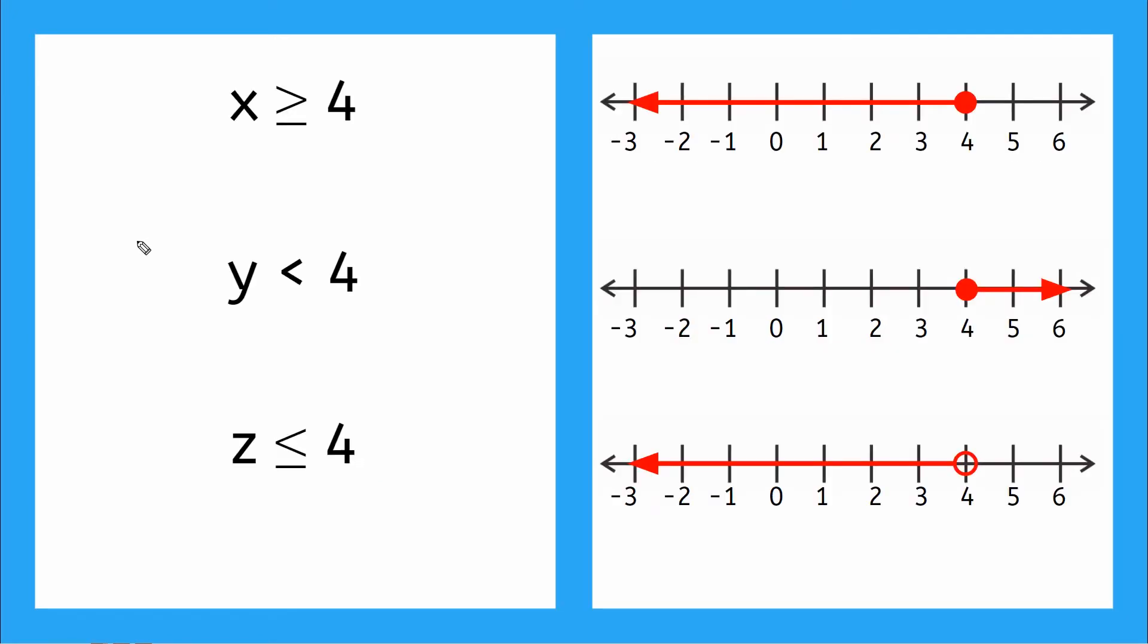For our last example, let's match the inequalities in the left box with the correct graph in the right box. So how should we get started? Well, let's take a look at our inequalities. This one says x is greater than or equal to 4, y is less than 4, and z is less than or equal to 4. So all of my numbers here have a 4, and all of my graphs look like they have a circle at the 4. Okay.